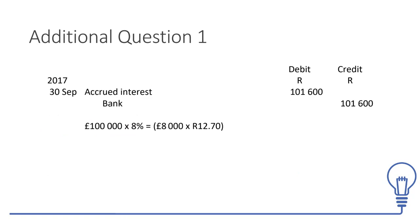Remember the journal entry everyone forgets: we must show that the interest is actually being paid at settlement date. The full 8,000 pounds is raised at the closing spot rate on settlement date. We credit bank and debit the accrued interest to eliminate it, because payment is being made. That is it for unhedged instruments.